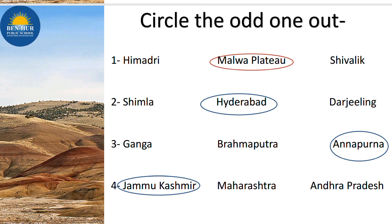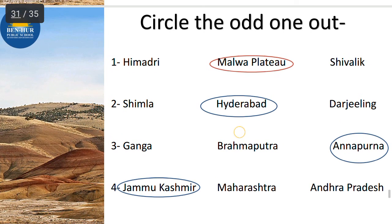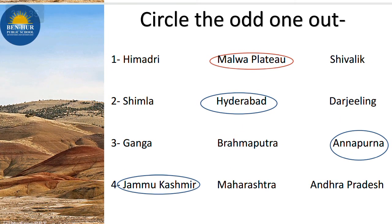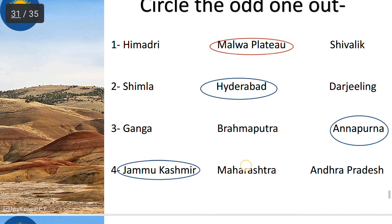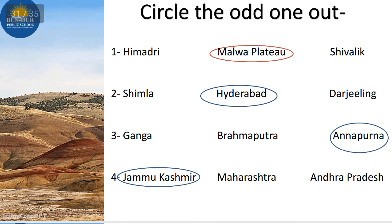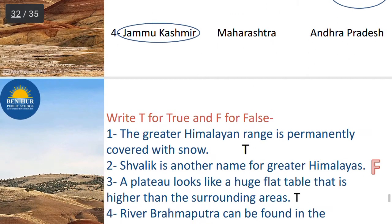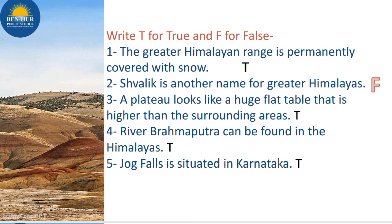Circle the odd one out. First: Himadri, Shivalik, Malwa Plateau — the odd one is Malwa Plateau, because Himadri and Shivalik are Himalayan ranges while Malwa is a plateau. Second: Shimla, Hyderabad, Darjeeling — the odd one is Hyderabad, because Shimla and Darjeeling are hill stations. Third: Ganga, Brahmaputra, Annapurna — the odd one is Annapurna, which is a mountain name. Fourth: Jammu Kashmir, Maharashtra, Andhra Pradesh — the odd one is Jammu Kashmir, as it is a hilly area while Maharashtra and Andhra Pradesh are not.